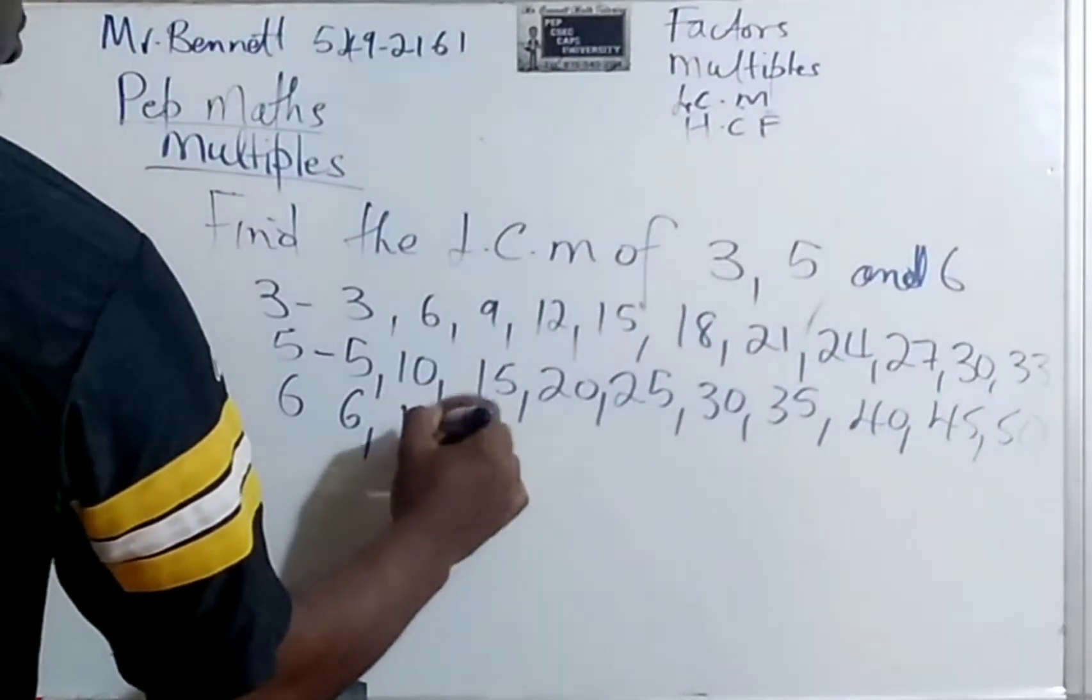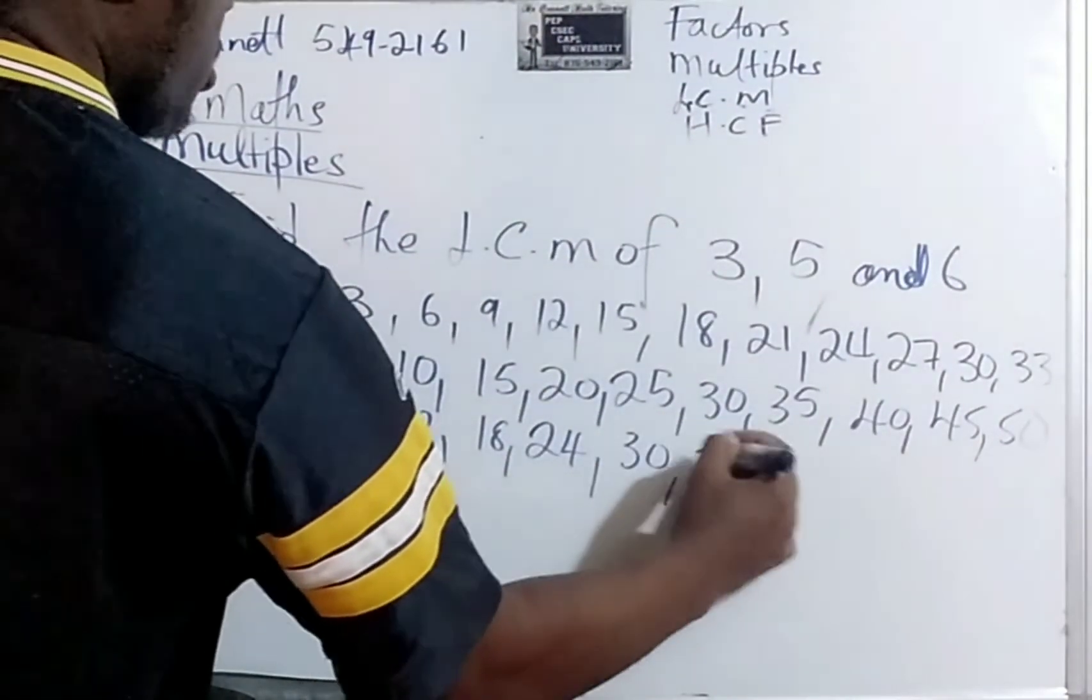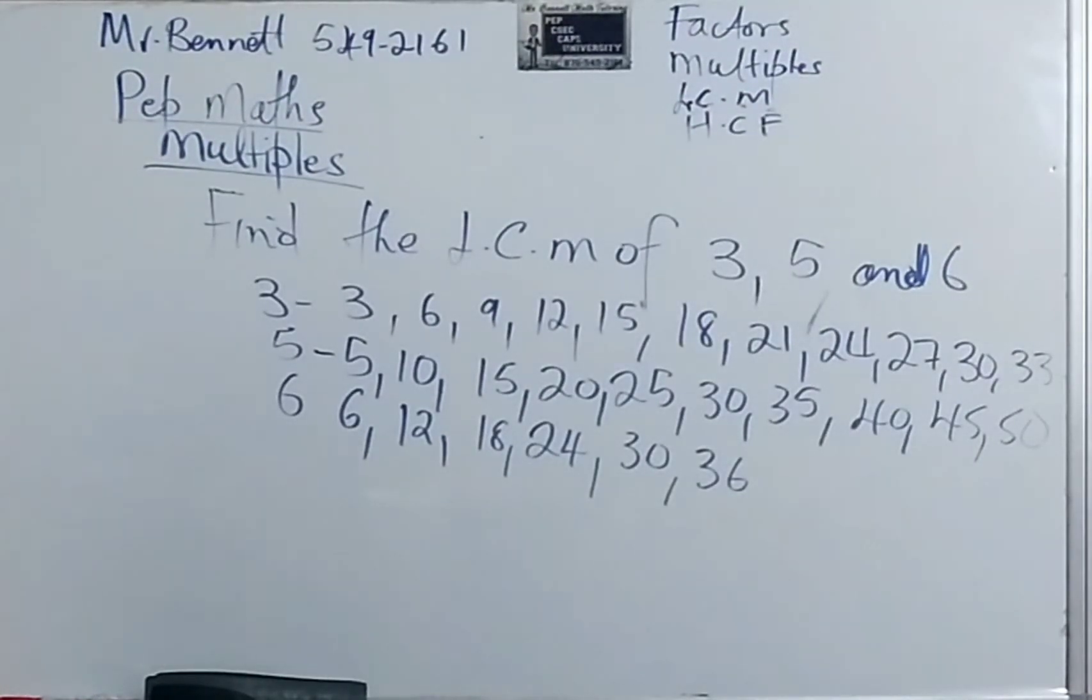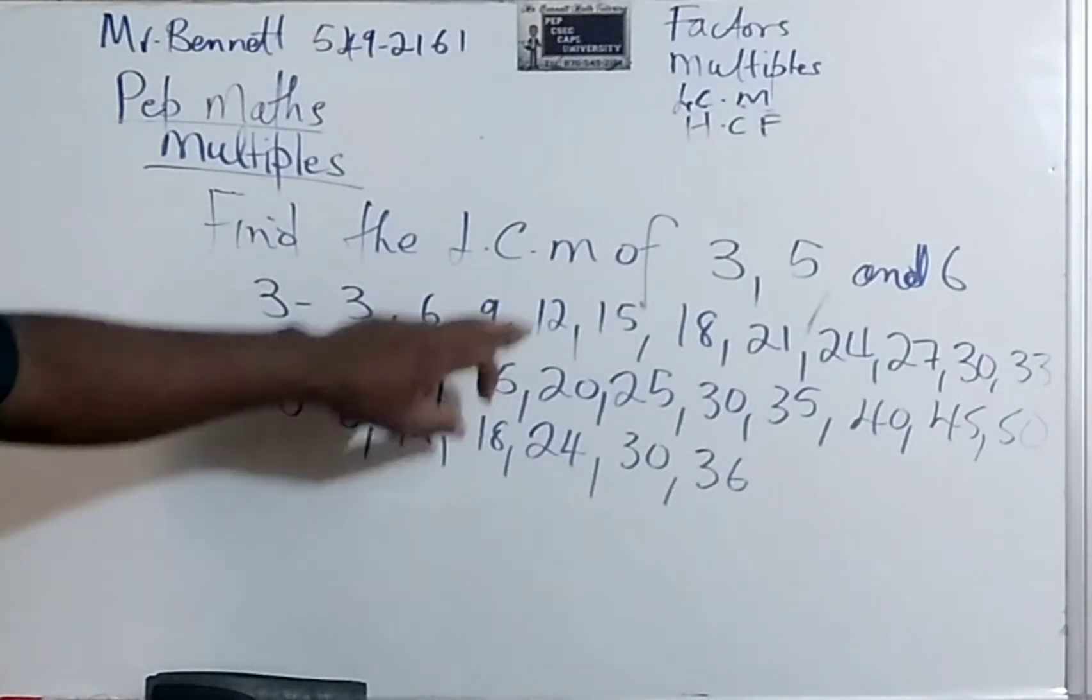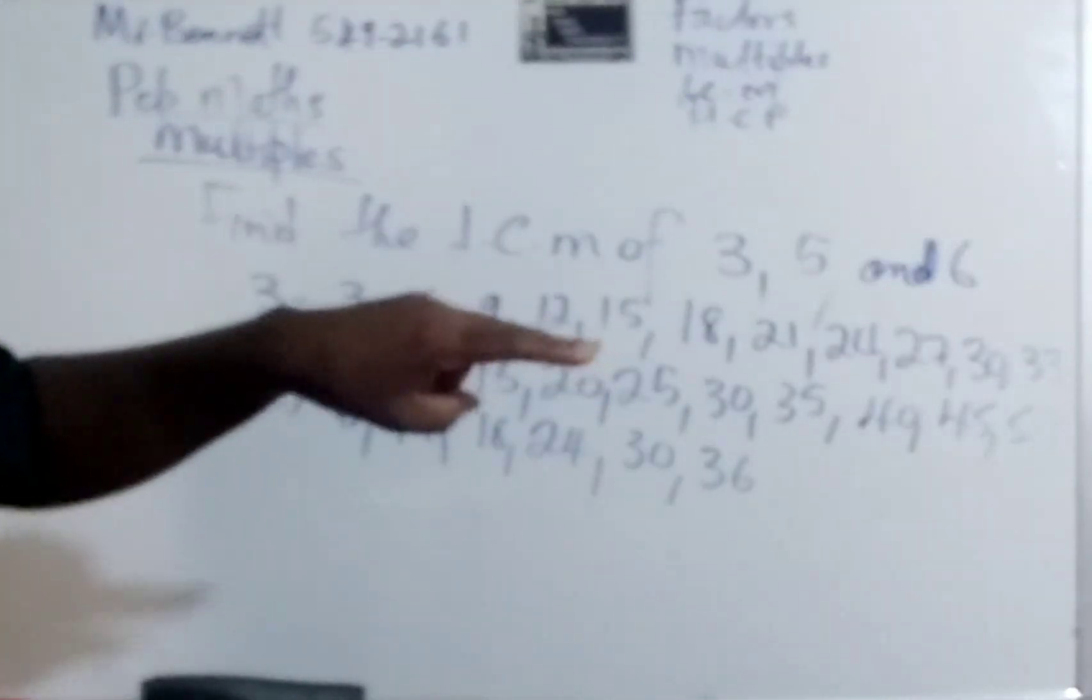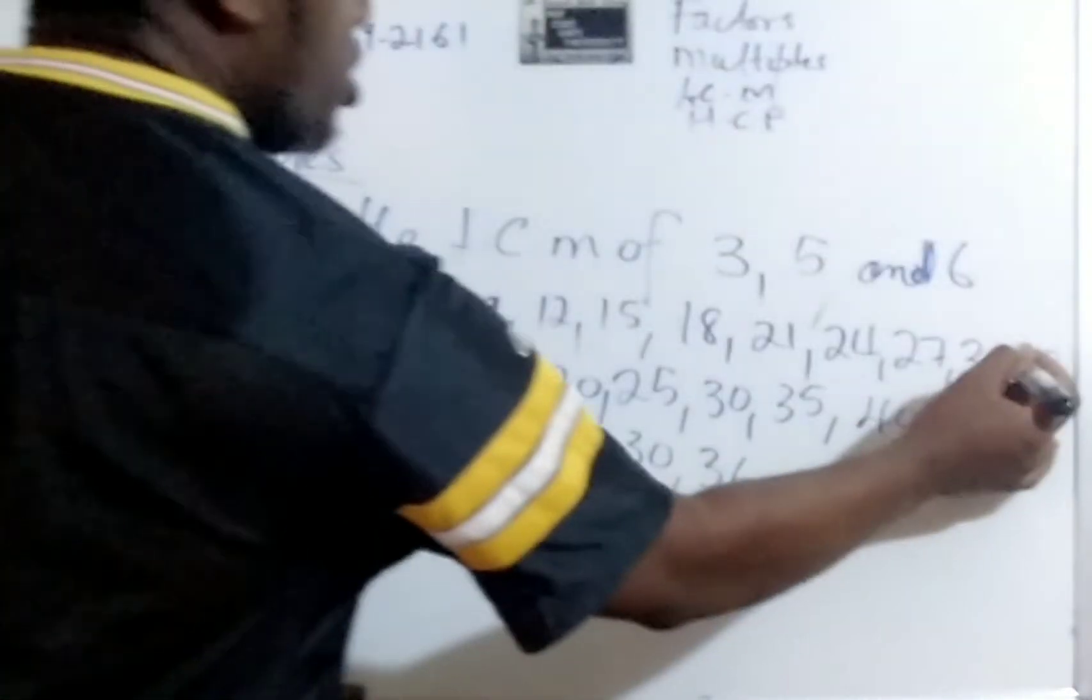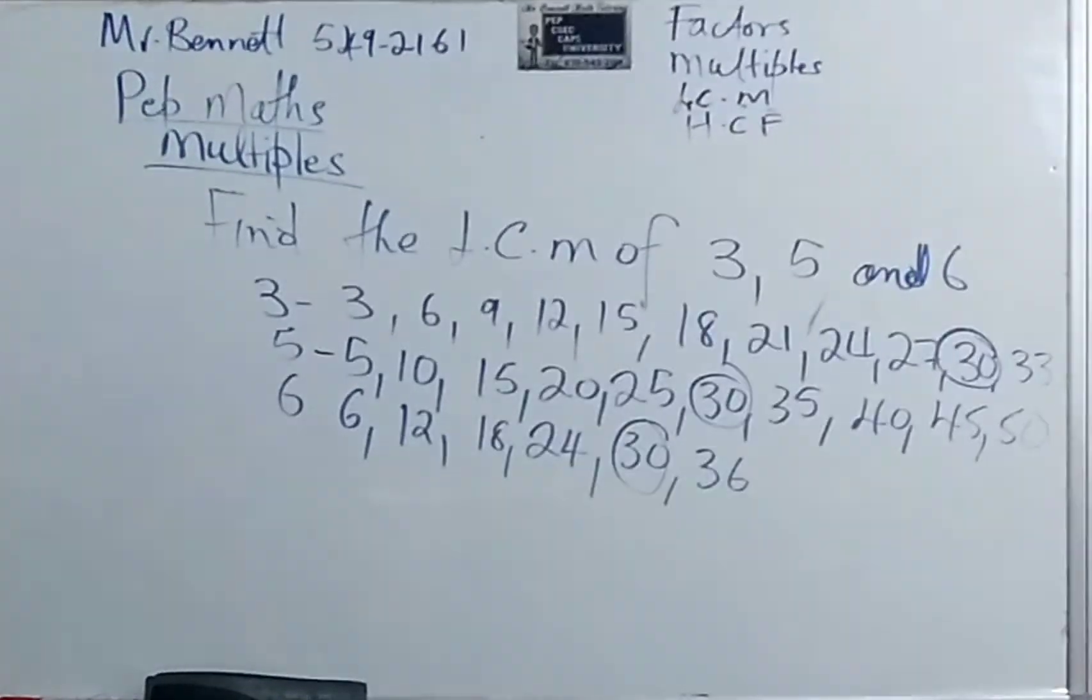Let us check out the 6 now. 6, 12, 18, 24, 30, 36. Now, let us examine to see which number comes in all three first. 3, no. 6, no. 9, no. 12, there is no 12. 15, no. 18, no. It is only in this. But it must be in all three. 30. 30, 30. So as you can see, it is 30. So therefore, 30 is the lowest common multiple of 3, 5, and 6.